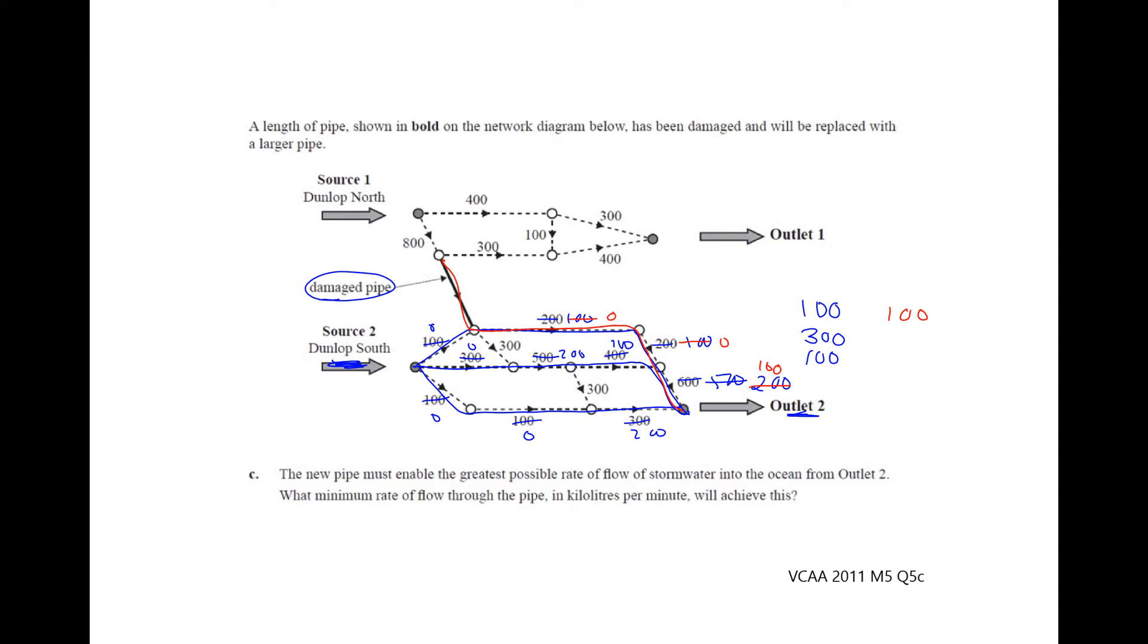And then secondly, we could come down the damaged pipe, across this 300 there, down and across the bottom, and our smallest value on that path is 200, so let's subtract 200. This is 100, and now we have no other pathways from damaged pipe as our start point through to outlet 2.